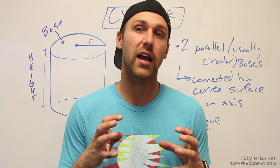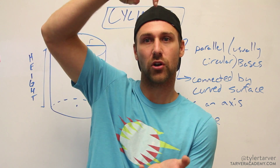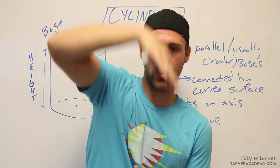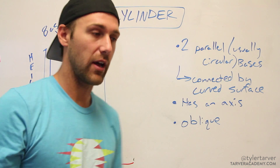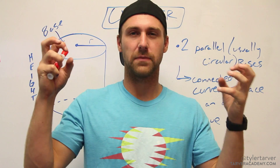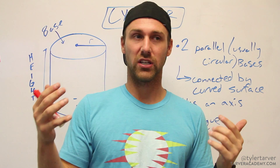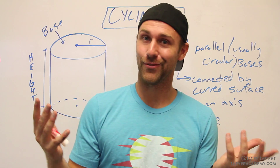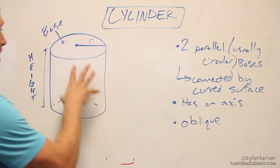Some common cylinders would be like a soup can or a Pringles can — anything where you have two circles connected by a curved side. PVC pipe looks like a cylinder. It differs from a prism because it's not made of flat shapes, it's usually a curved shape. Connecting some learning, ladies and gentlemen.